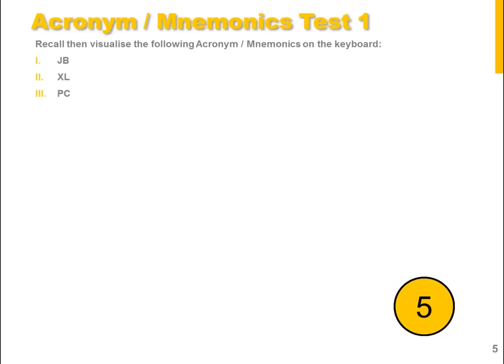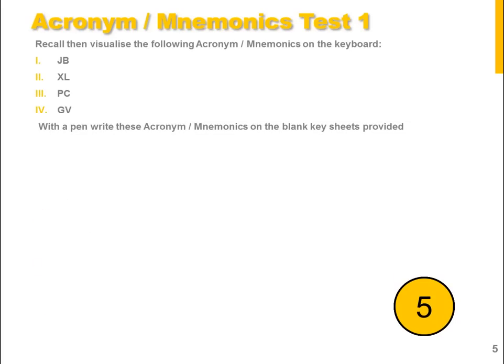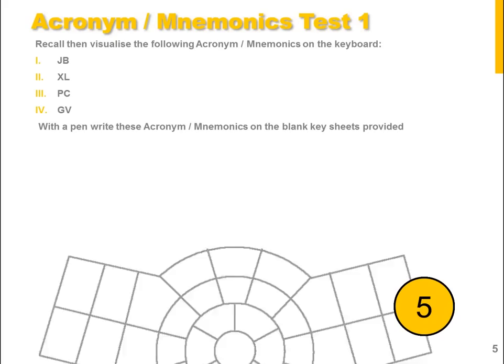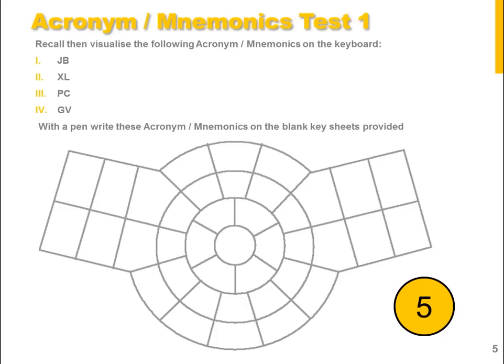JB — James Bond, XL — Extra Large, PC — Personal Computer, and GV — Great Value. Now pause the video and see if you can fill in on the blank sheet provided where each of the acronyms and mnemonics should be.